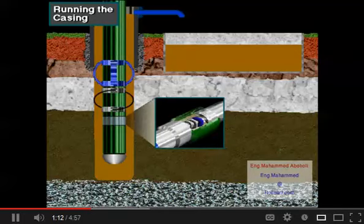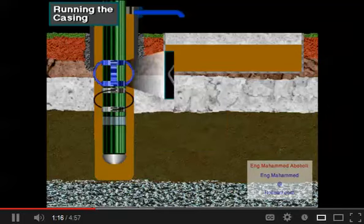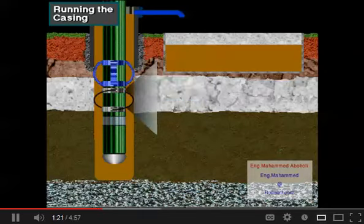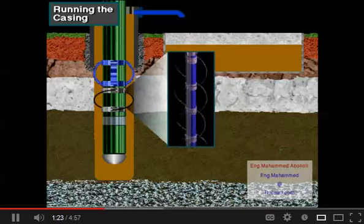Centralizers keep the casing off the wall of the hole to ensure a good cement job, and scratchers remove wall cake to ensure a good cement bond to the wall of the hole.